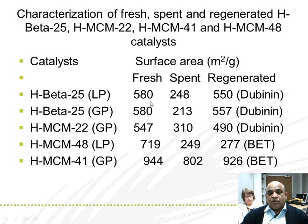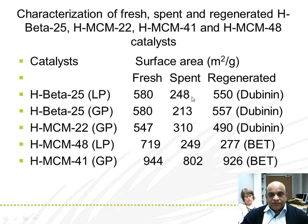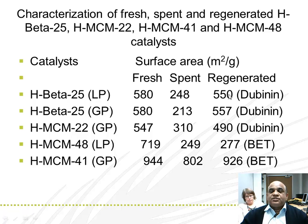Here I present the results of the fresh and spent catalysts. As you can see, beta zeolite fresh catalyst has 580 m²/g, whereas the spent catalyst has much lower surface area, and the regenerated catalyst is 550 m²/g. This means the coke was successfully burned out from the catalyst pores and the surface area was regained.